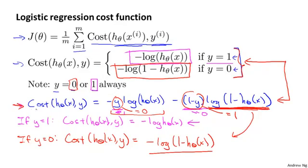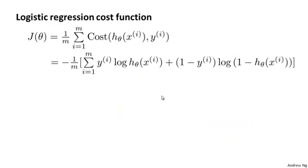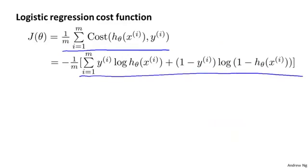So this shows that this definition for the cost is just a more compact way of taking both of these expressions—the cases y equals 1 and y equals 0—and writing them in one more convenient form with just one line. We can therefore write out our cost function for logistic regression as follows. It is 1 over m of the sum of these cost functions. And plugging in the definition for the cost that we worked out earlier, we end up with this, and I just brought the minus sign outside.